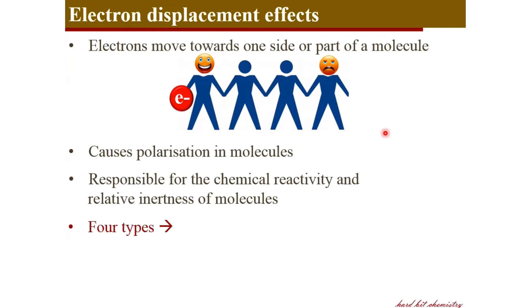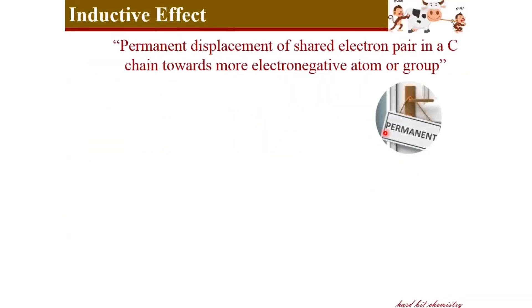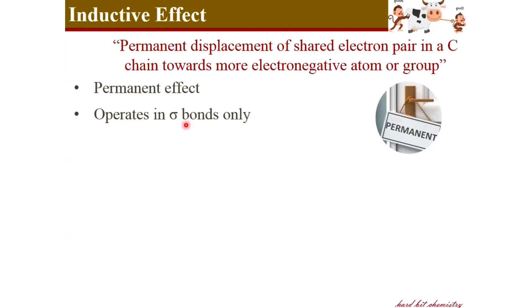There are four types of electron displacement effects: inductive effect, electromeric effect, hyperconjugation, and resonance effect. In this session, we will discuss exclusively the inductive effect. Inductive effect is a permanent displacement of a shared electron pair in a carbon chain towards a more electronegative atom or group. It operates in sigma bonds only, and the displacement of the shared electron pair occurs along the carbon chain.